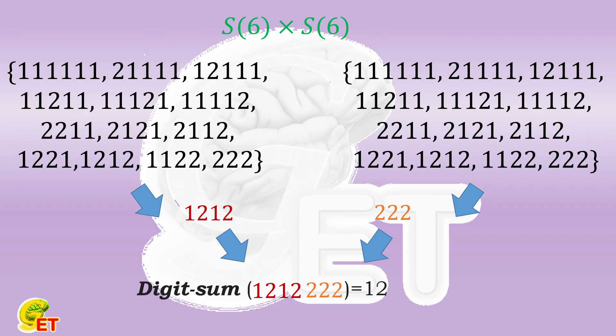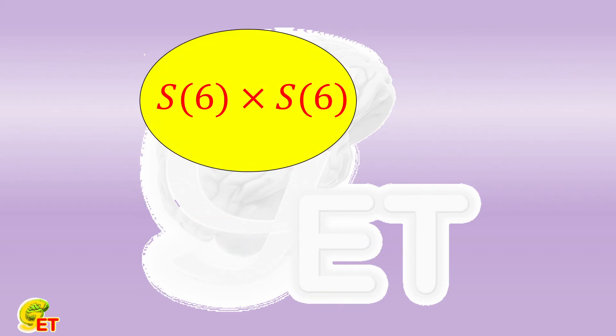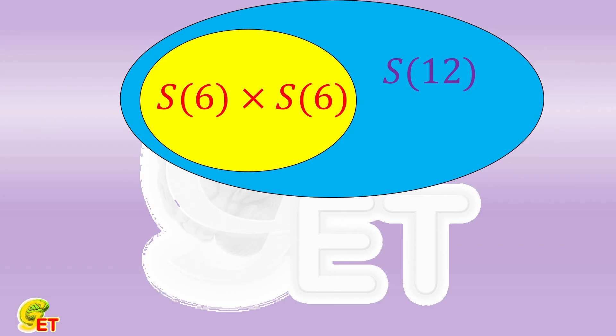In addition, because we can cut this new number off in such a way that the summation of the digits before the cutting point is 6, there will be no way to have duplication in the set of those new numbers. That is to say, those S of 6 times S of 6 numbers form a subset of those S of 12 numbers whose digit sum are 12.